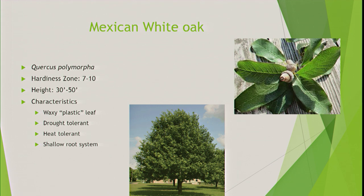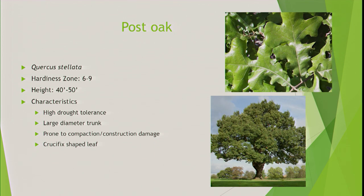Mexican white oak — remember it's like a live oak, semi-deciduous, waxy plastic leaf, very drought tolerant, more heat tolerant than a bur oak, and has a shallow rooting system. Post oaks are hardy and drought tolerant but very susceptible to construction damage and compaction — you'll see them in big open fields, generally not next to buildings. They do well with heat and drought, have a crucifix or T-shaped leaf, and their trunk is very fat compared to the height.